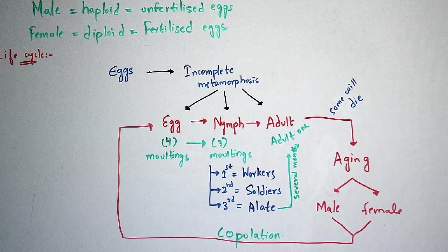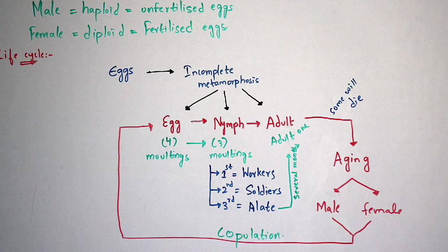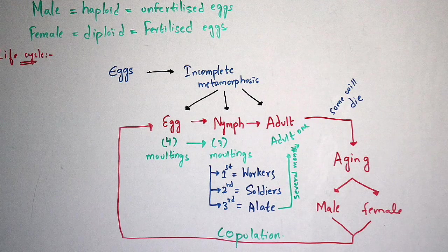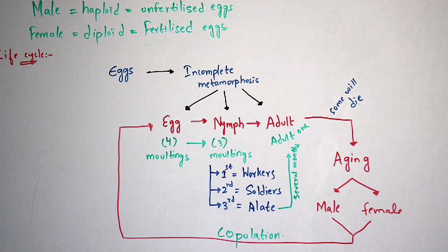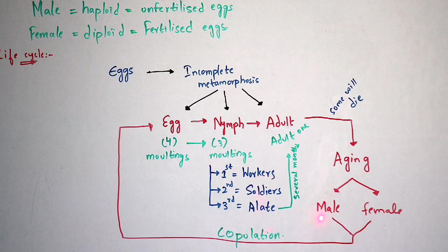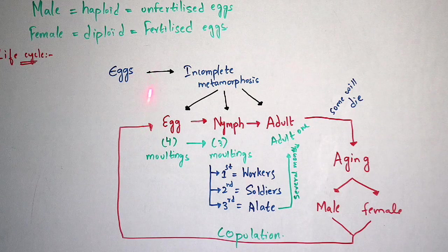After the incomplete metamorphosis process is completed, adults are formed from the eggs. After the adult stage, the termite enters the aging process — some will die and some will not die. Those which survive undergo aging and develop as male and female. The male is considered as king and the female as queen. This king and queen undergo copulation, which leads to the formation of eggs, and again the eggs undergo incomplete metamorphosis — again forming workers, soldiers and alates, then adults.